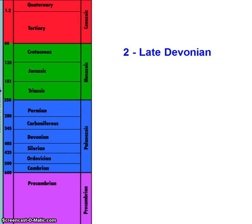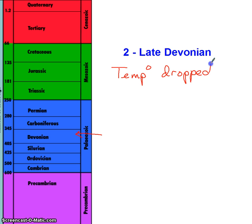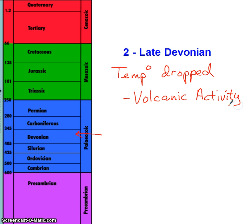Number two, the late Devonian — around later in the Devonian period. Again, this was due to a climate change where temperatures dropped. Possible causes, and this is kind of a recurring theme, is volcanic activity. You're going to find that these two causes kind of repeat themselves as possible causes of all of these mass extinctions.